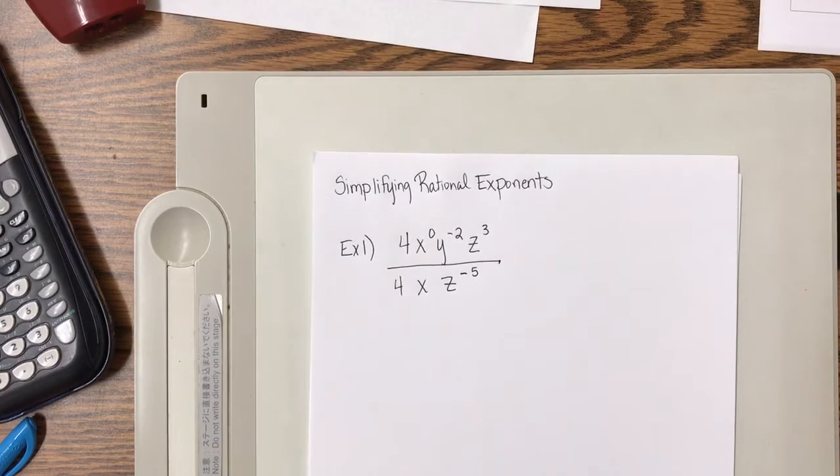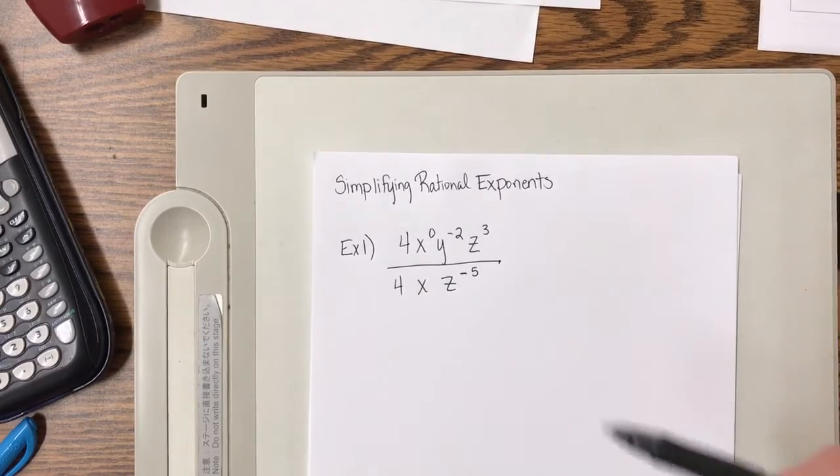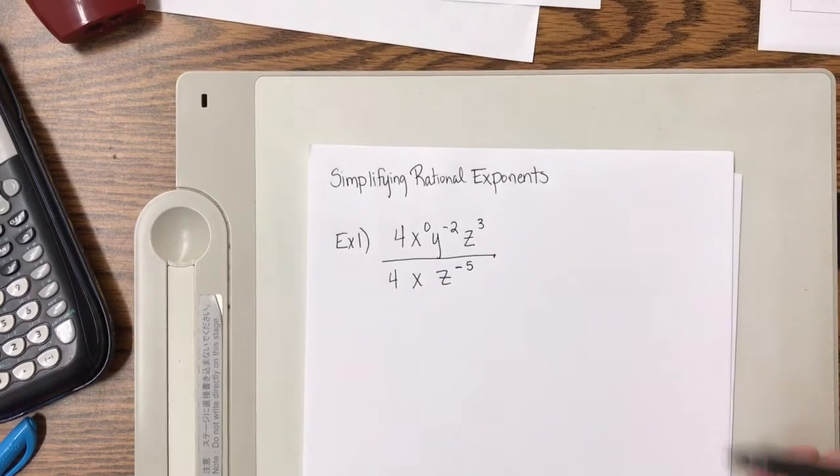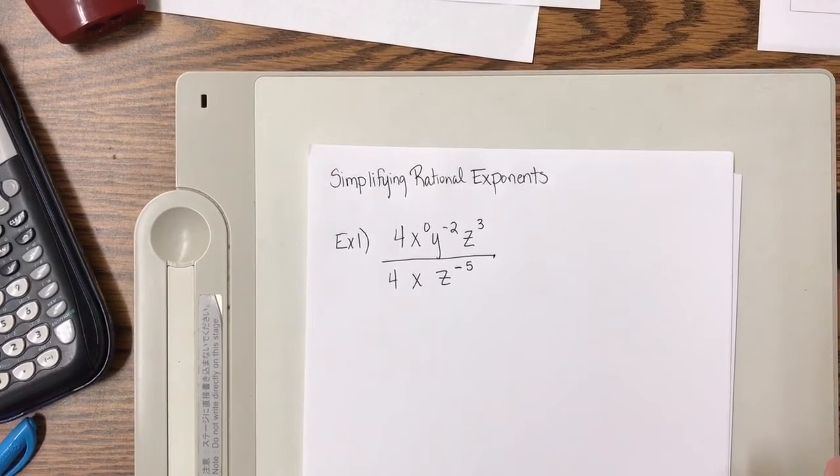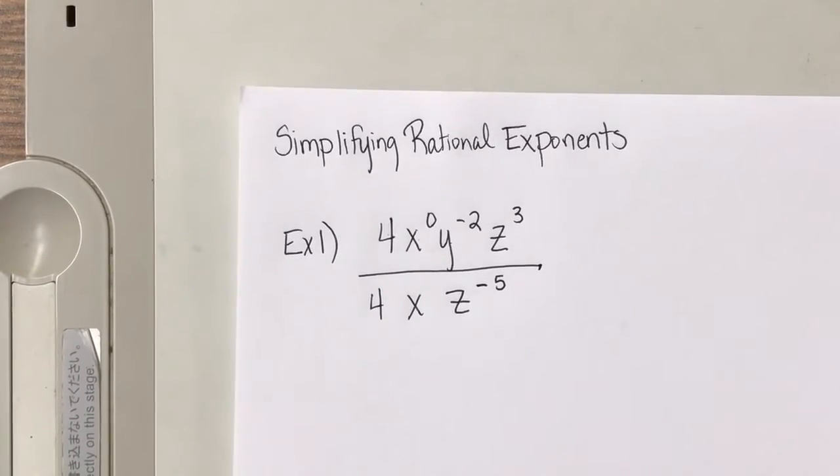In this problem, I notice first off I'm going to have 1, 2, 3, 4 total bases: 4, x, y, and z. Also, I notice there's division involved. So in this case, I'm dividing and I can go back to what we learned before. Follow the quotient rule, which says same base, subtract the exponents.